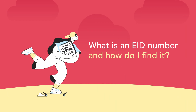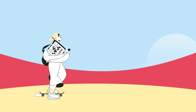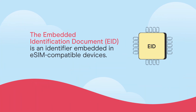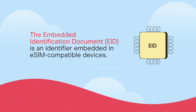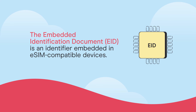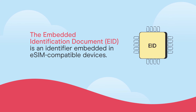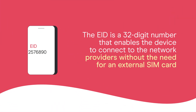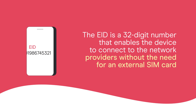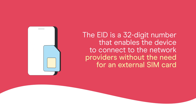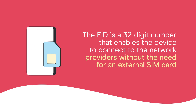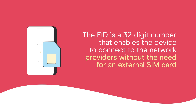What is an EID number and how do I find it? The embedded identification document, EID, is an identifier embedded in eSIM compatible devices. The EID is a 32-digit number that enables the device to connect to network providers without the need for an external SIM card, forming the basis of eSIM technology.